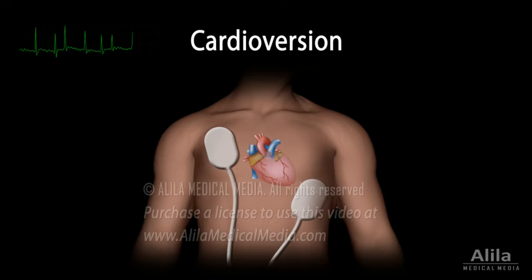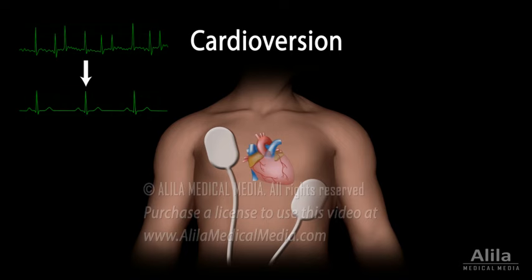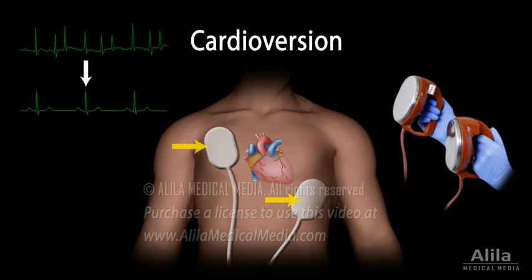Electrical cardioversion, or simply cardioversion, is a medical procedure that uses electrical shocks to treat abnormal heart rhythms, arrhythmias, in particular tachycardias. The procedure is done by delivering a brief current across the chest through a pair of manual paddles or adhesive, hands-free patches.